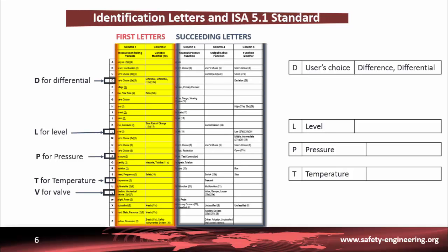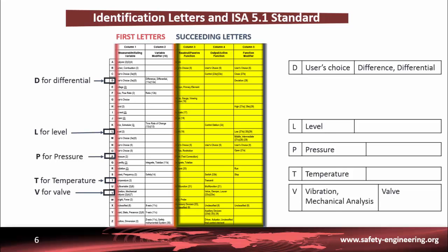Another example is the letter Q for integration — this letter is associated with the first letter to indicate an integration of the measurement over time. For example, FQ means a flow totalizer or water meter. The second main column, the succeeding letters, is used to designate the function of the component or to modify the meaning of the first letter. For example, TV means a valve that controls the measured variable — here, temperature.